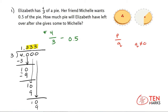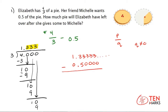Now that I have the decimal for the fraction, we can do the subtraction. I'm going to write 1.3333 — these digits are going to repeat forever. Now subtract away 0.5. I'm going to include zeros after the digit 5 for the decimal places we need to subtract. 0.5000 is the same thing as 0.5, so we haven't changed that number.